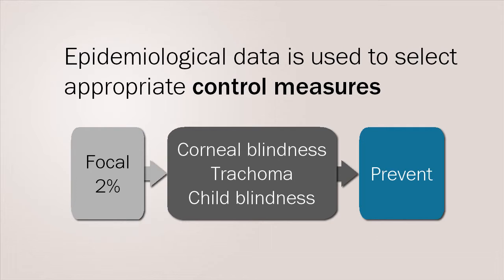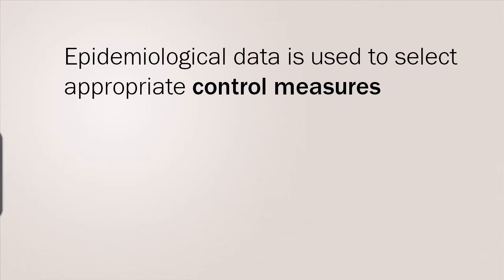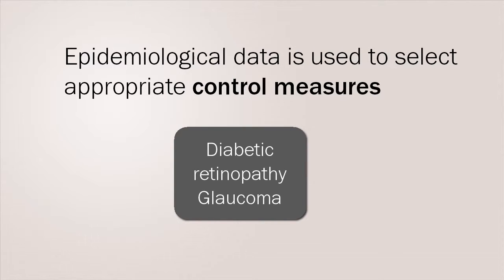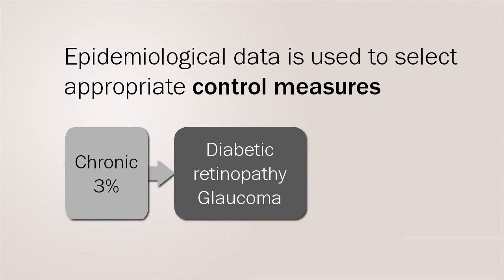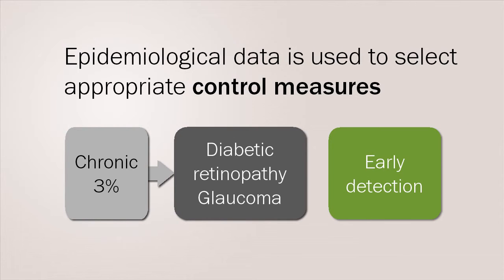Understanding local needs at the community level is important for developing strong prevention strategies. Diabetic retinopathy and glaucoma fall into the chronic diseases category — patients need to be detected early and treated to prevent visual impairment. Screening strategies are needed to find patients as early as possible, and health systems also need to be prepared to appropriately manage cases identified by screening.